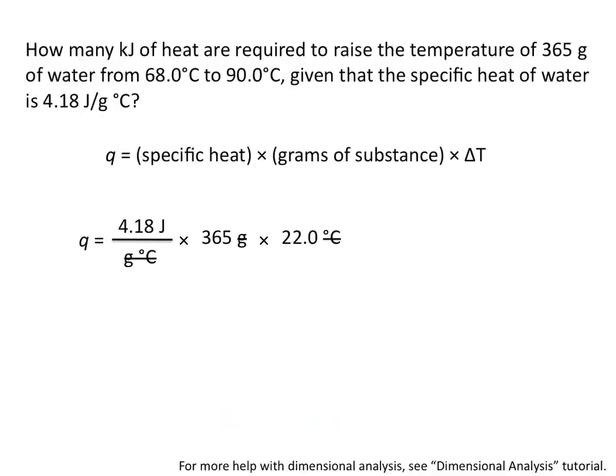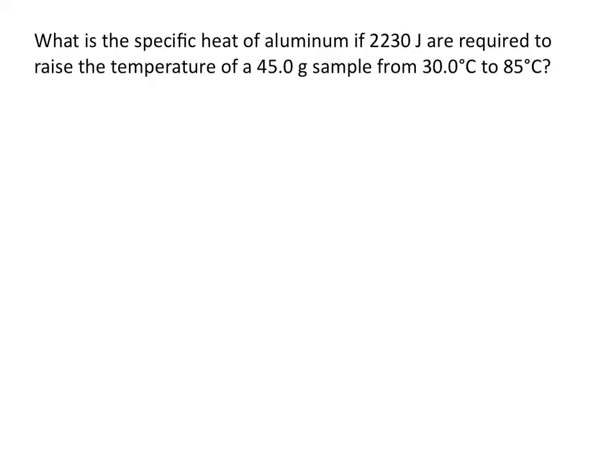Going back to our problem, we can cancel degrees Celsius and come up with an answer of 33,600 joules. But our problem asks for kilojoules, so we need to convert. Remember that 1,000 joules equals 1 kilojoule, which allows us to cancel units of joules and gives a final answer of 33.6 kilojoules.